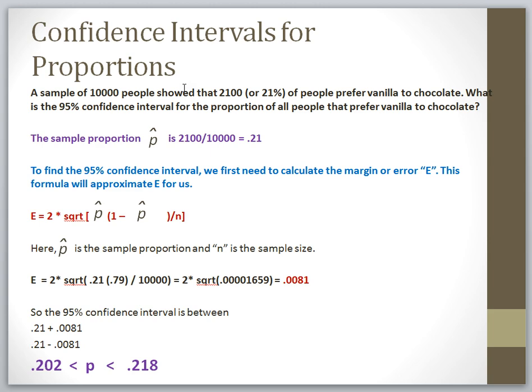In our next example, we might want to find the confidence interval for a proportion rather than for a mean. So in this particular example, we have a sample of 10,000 people, and 2,100 of those people actually prefer vanilla over chocolate. Well, if 2,100 of these people out of 10,000 prefer vanilla, the percentage or proportion of the people that prefer vanilla is 21% or 0.21.